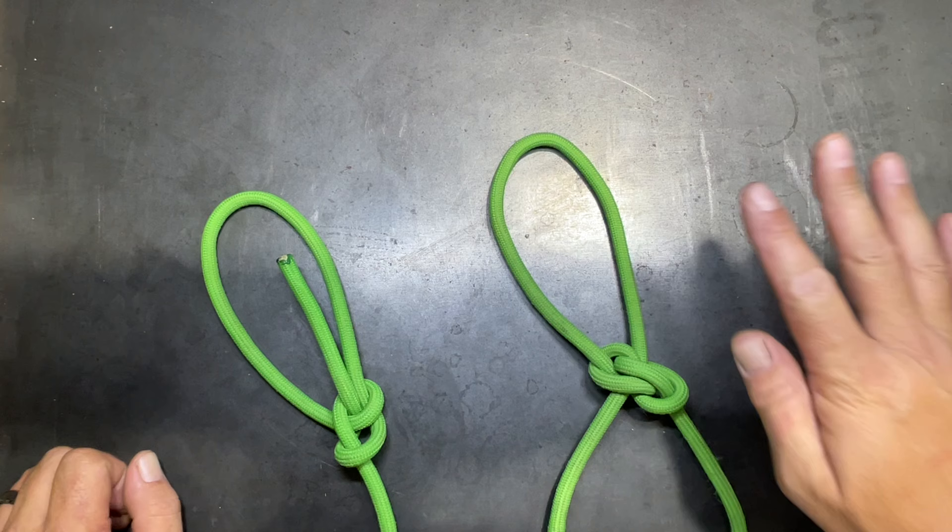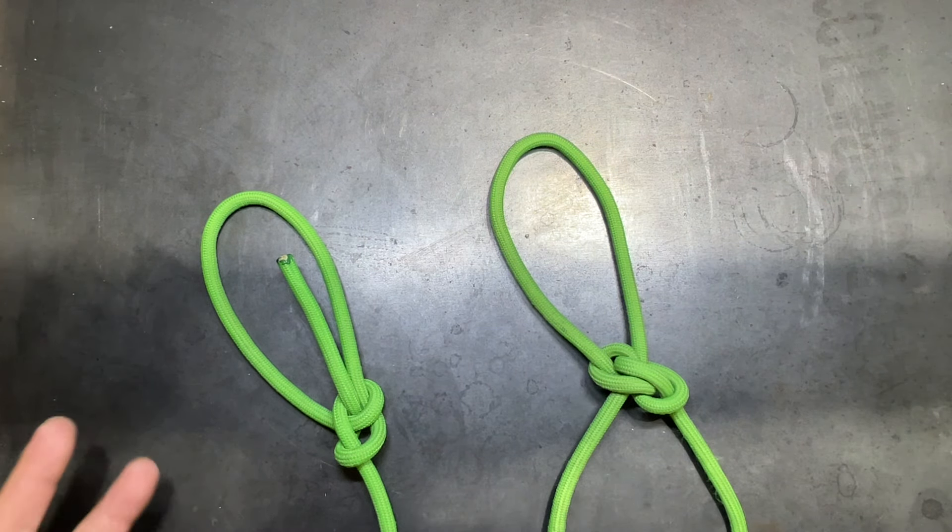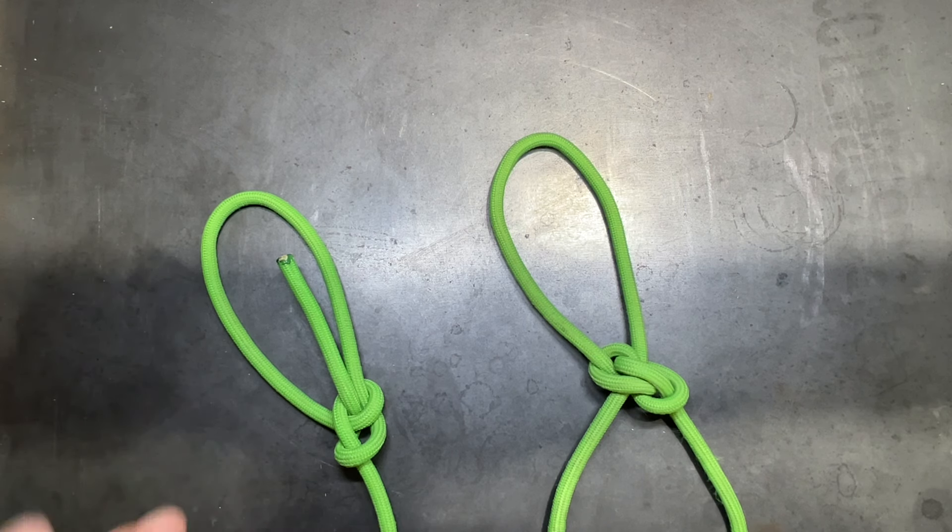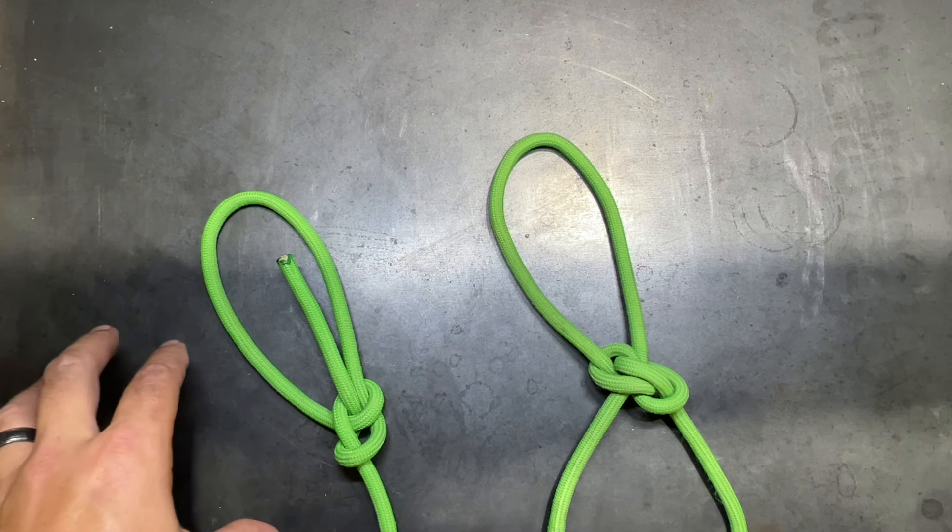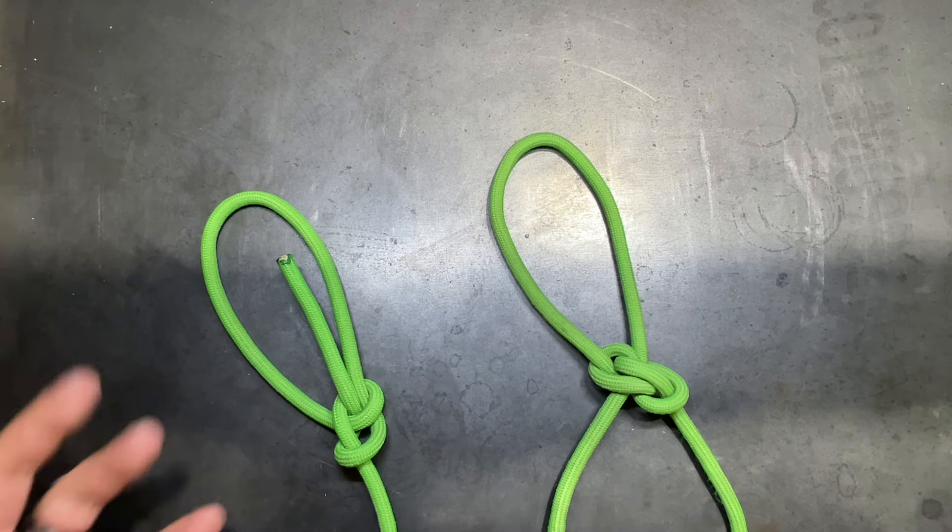I have two loop knots, the Zeppelin loop and the bowline. Now the bowline is far and away the most versatile knot you could ever learn because of all of its different variants and the number of places where you can use it. And for most cases, the bowline is going to be more than sufficient as a fixed loop knot.